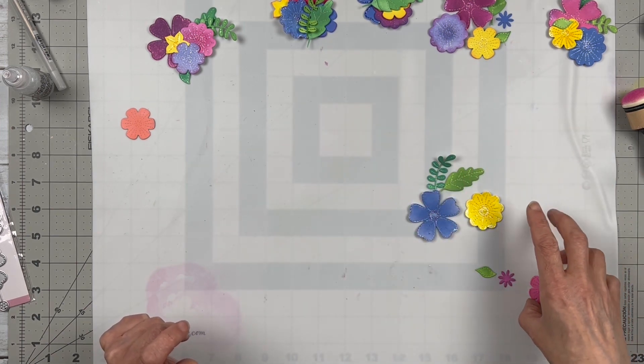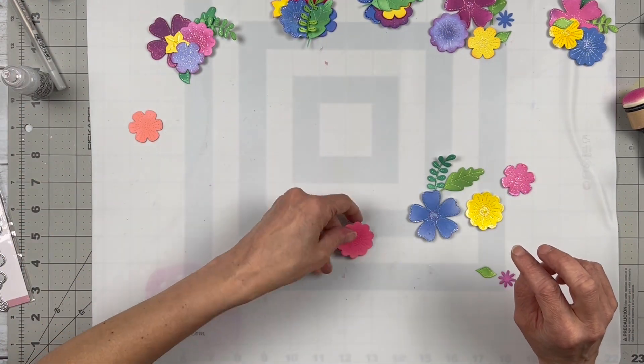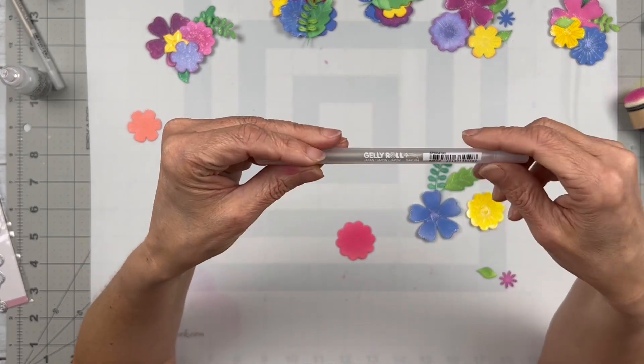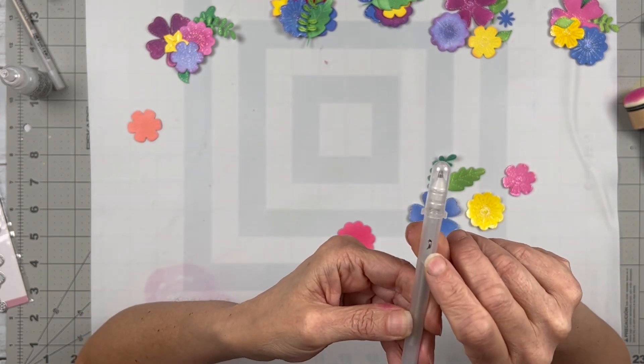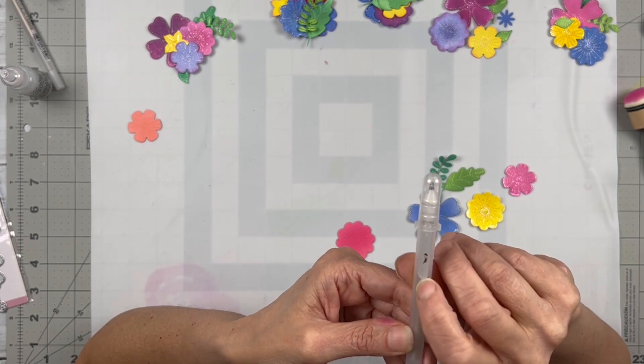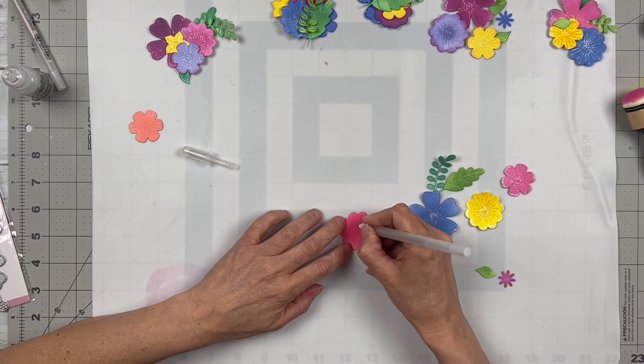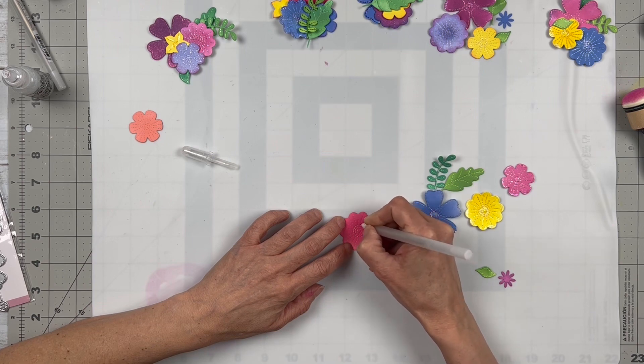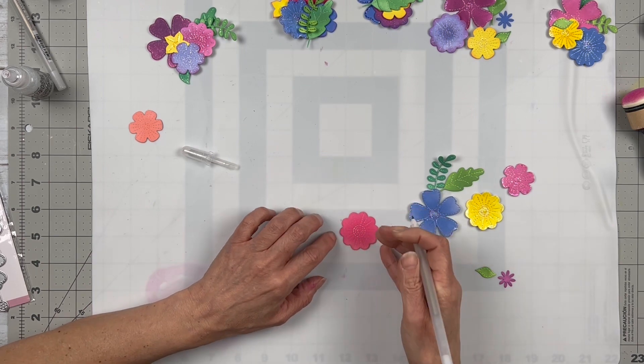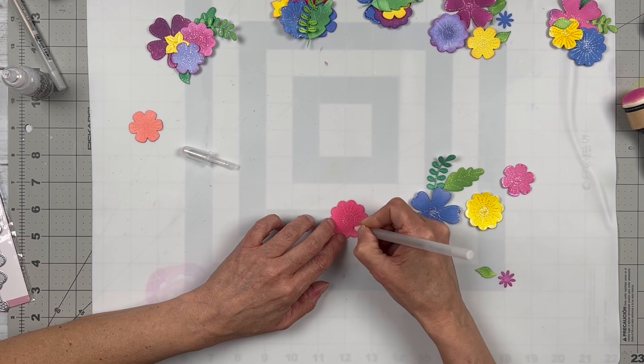I took a Sakura Jelly Roll pen - they have sparkly ink inside of them. I went in the stitched areas and just kind of filled that in just to give it a little extra detail. It's a little bit time consuming but I love the extra little detail it gives and that little extra sparkle.